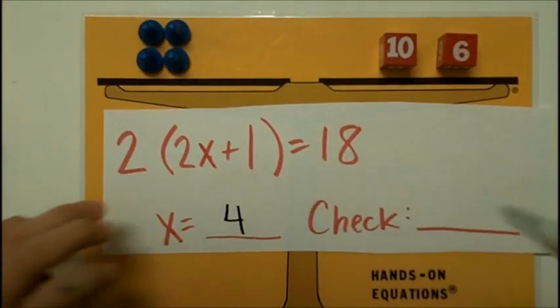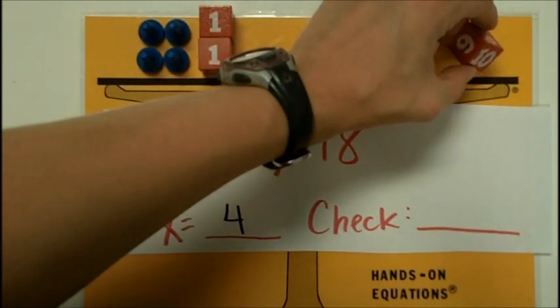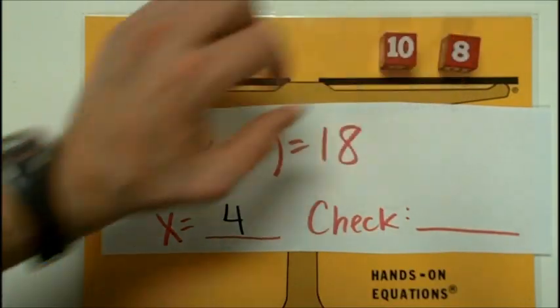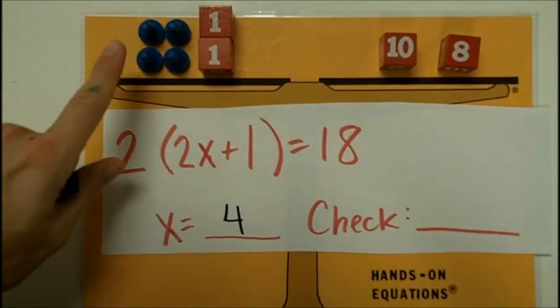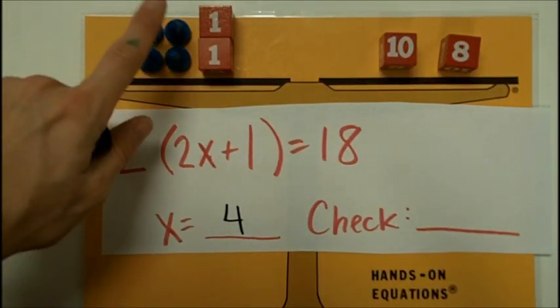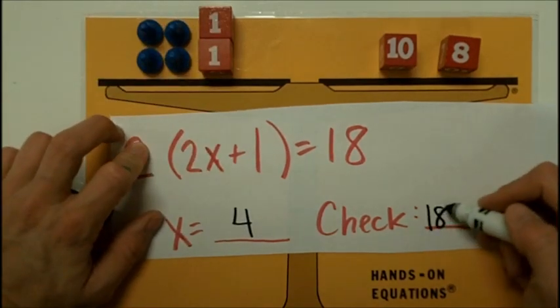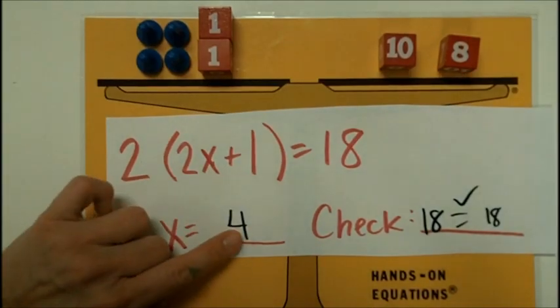I started with those over here, and then also this was an 18. So now I'm going to plug in 4 to see if this equation balances. 4, 8, 12, 16, 17, 18. And this side equals 18 as well. So x does equal 4.